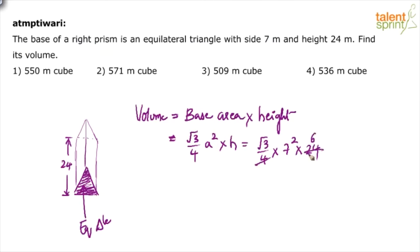Simplify this now. It goes 6 times. 7 square is 49. 49 into 6 will be 300 minus 6, 294 into root 3. 294 root 3 basically.